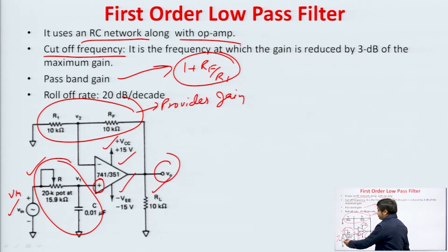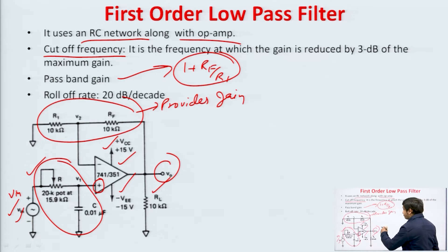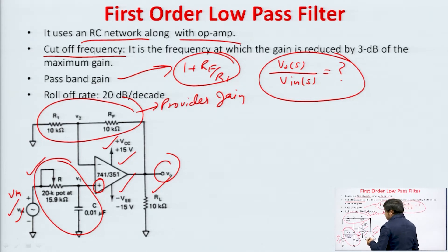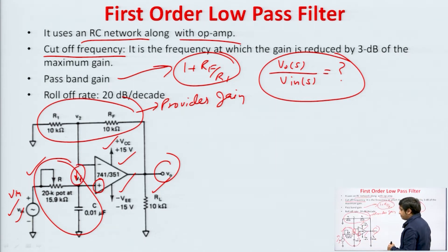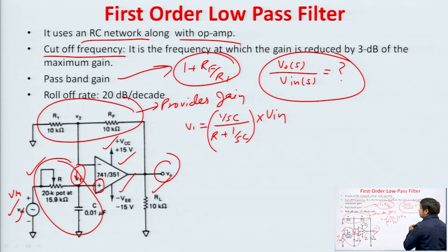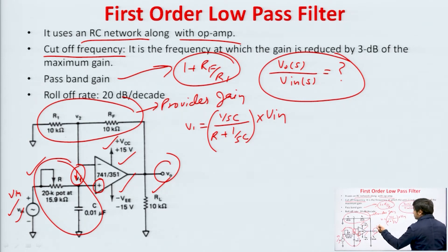Now we have to derive the transfer function of this first order low pass filter — that is V_out(s) upon V_in(s). We can derive it easily. Let us say the voltage at the non-inverting terminal is V1. What will be the value of V1 in terms of V_in by applying the voltage division rule? V1 will be equal to the impedance of the capacitor, which is 1/sC, upon (R + 1/sC), into V_in. Further we can derive the relation between V_out and V1.